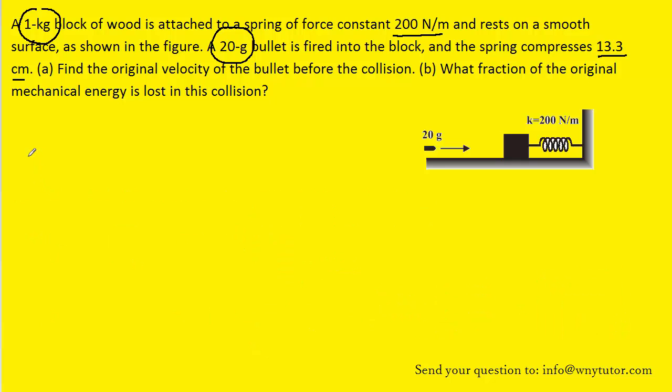So to summarize what we found so far, the initial speed of the bullet was about 95 meters per second. And then after it collided with the box, we found that the speed was about 1.862 meters per second. We can use this information to calculate the solution to part B.